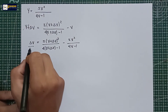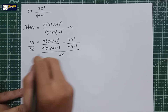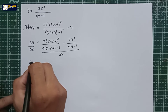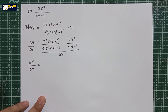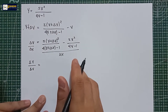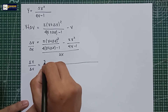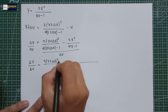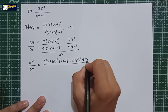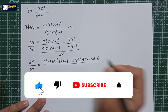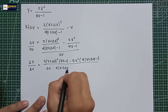The next step is to simplify. We will use the butterfly method, where the butterfly method is used to add or subtract two fractions. We have 5(x plus delta x) squared multiplied by (4x minus 1), minus 5x squared multiplied by (4x plus delta x minus 1), all over delta x multiplied by (4x plus delta x minus 1) multiplied by (4x minus 1).